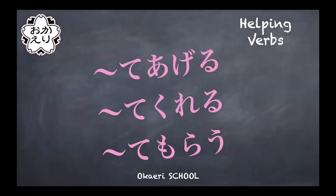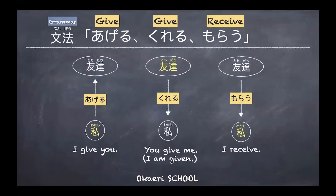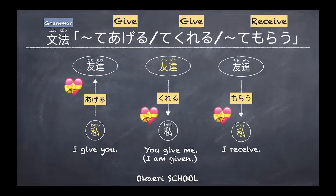Today we're going to talk about te-form verbs plus ageru, kureru, and morau as helping verbs. Last time we looked at these three expressions: to give with a different person as subject, and to receive. For example, from watashi to tomodachi — myself to a friend — ageru means I give. From the other side, kureru means you give me. The subject is the other person. I receive.